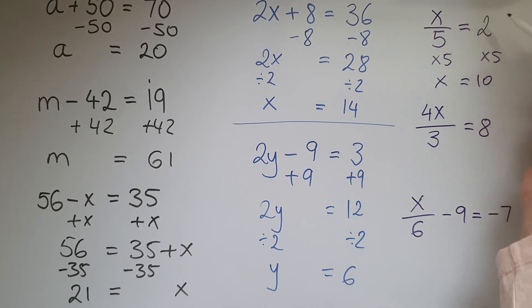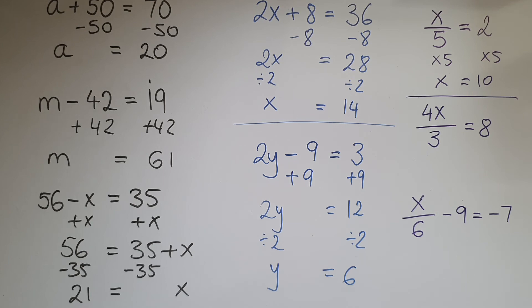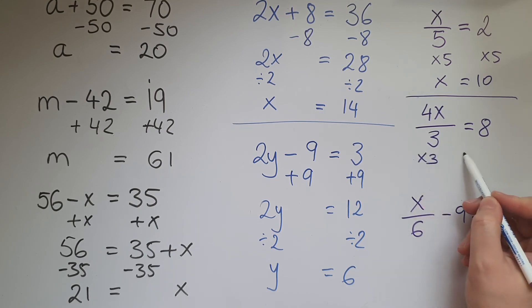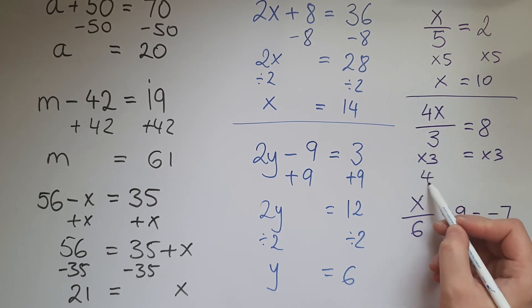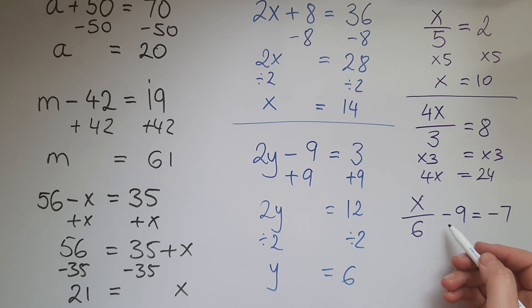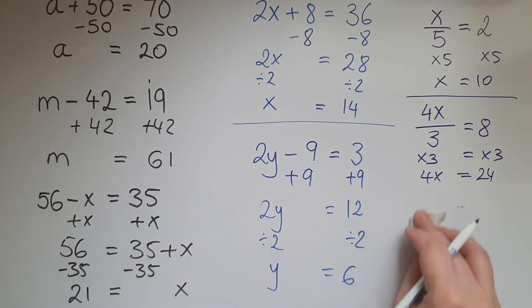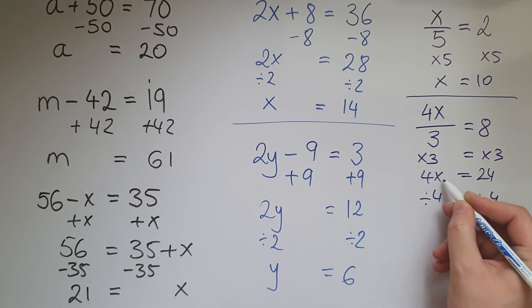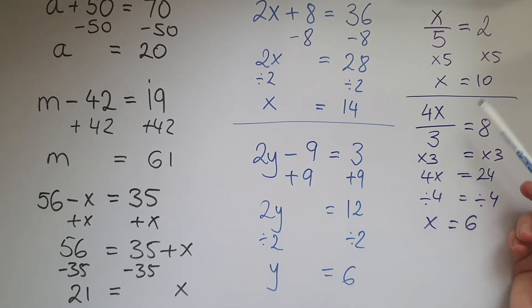4x divided by 3 equals 8. So we've divided 4x by 3, so we're going to multiply it by 3 now. So 4x is equal to 8 times 3 which is 24. So if 4x is 24, what is the value of x? So we're going to divide by 4 both sides so we can have x on its own. So 24 divided by 4 gives us 6. Let's try it out: 4 times 6 is 24, 24 divided by 3 gives us 8.